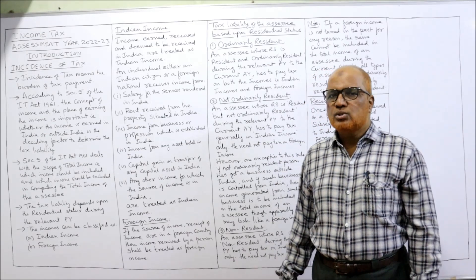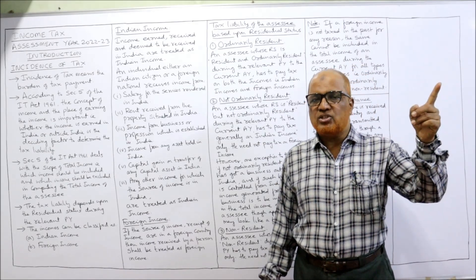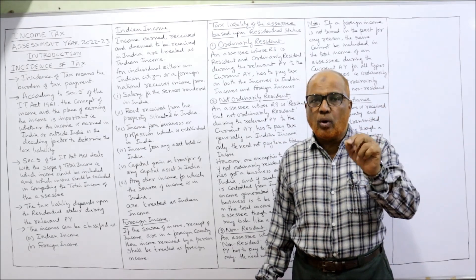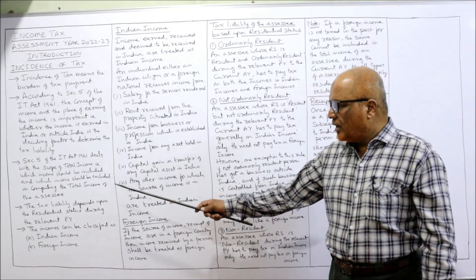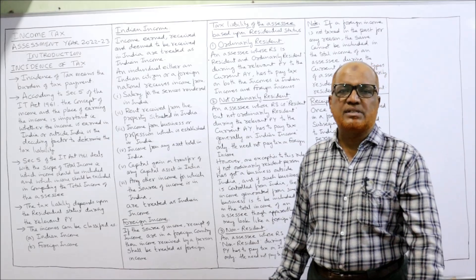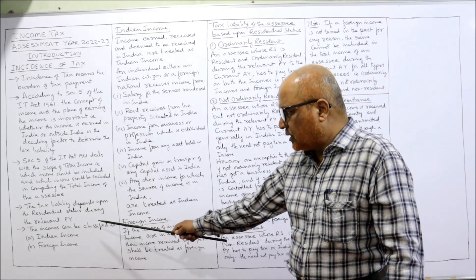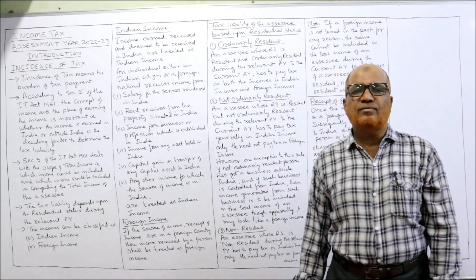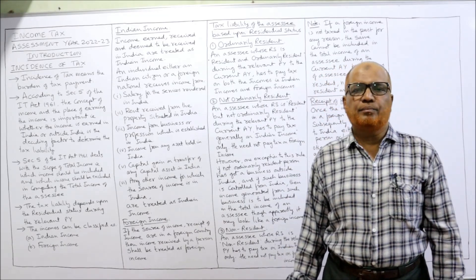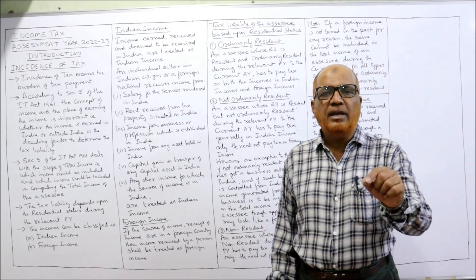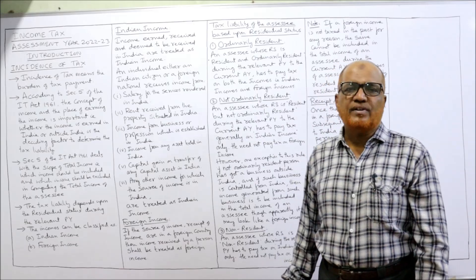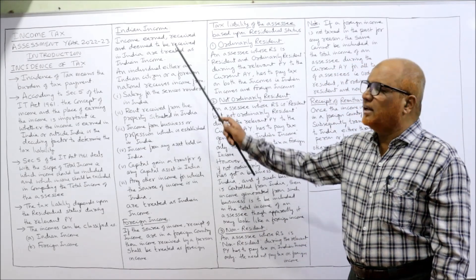If you have not watched the previous videos, go to the playlist of my channel, select Income Tax for assessment year 22-23, and watch the videos on residential status — that is very important. Now, depending on the residential status, we have to find out which income is taxable and which is not. Incomes can be classified into two categories: Indian income and foreign income. So first we discuss what is Indian income.